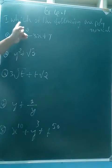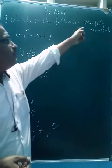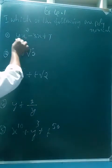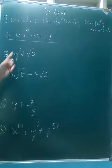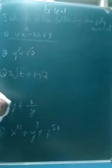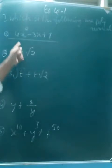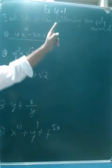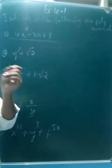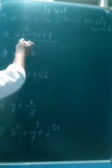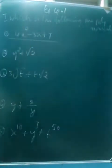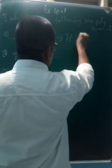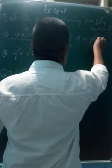Now we can go for the exercise: which of the following are polynomials? Give reason. For the first one, see the variable — forget the constant. x is a variable, it's one variable, and the power is a whole number. Therefore it is a polynomial. It is a polynomial with one variable.